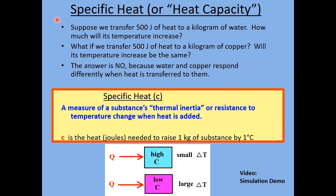Let's start off with a little thought experiment. Suppose we transfer 500 joules of heat to a kilogram of water. A liter of water has a mass of one kilogram. So let's take this liter of water and put it on some sort of hot plate. Suppose we know that we're going to transfer 500 joules of heat into the water. Obviously its temperature is going to increase — the question is, how much will its temperature increase?